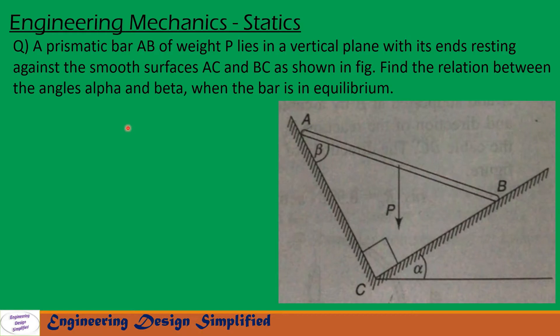Today's problem is, a prismatic bar AB of weight P lies in a vertical plane with its ends resting against the smooth surfaces AC and BC as shown in figure. Find the relation between the angles alpha and beta when the bar is in equilibrium.